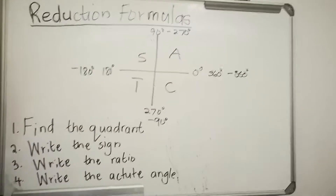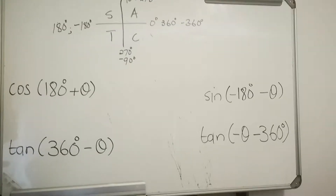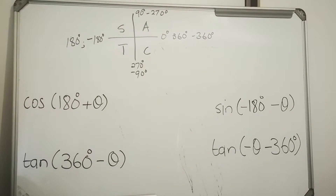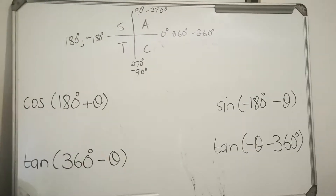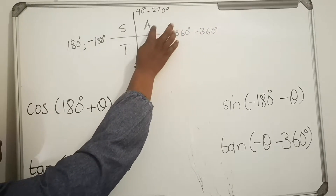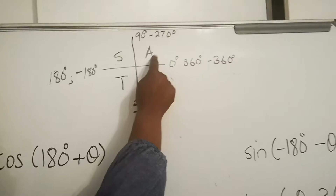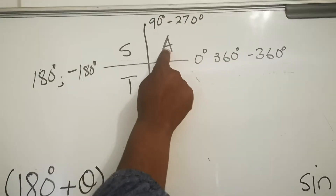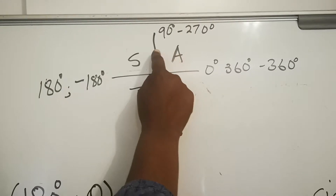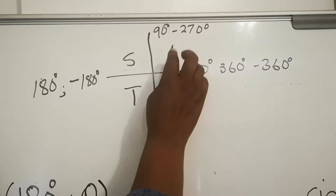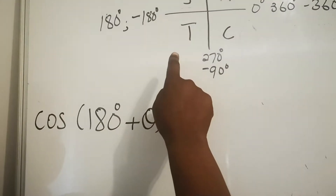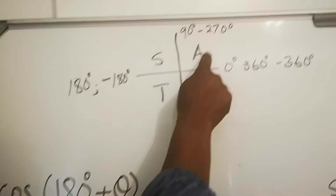Let's look at a few examples of how we reduce angles. The Cartesian plane: the A is for 'all', meaning all the ratios are positive in the first quadrant. The first quadrant is greater than 0 and less than 90. So if you have a number that says 90 minus, it will be in the first quadrant.